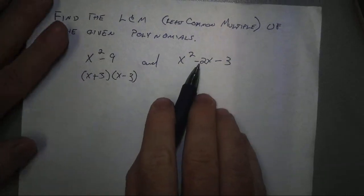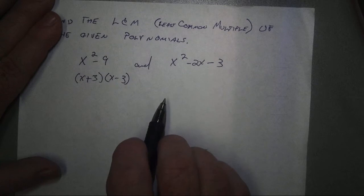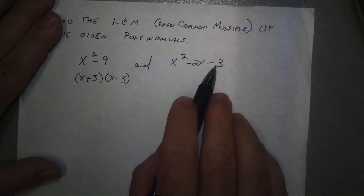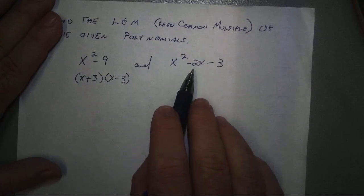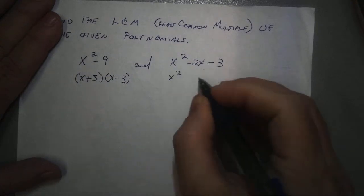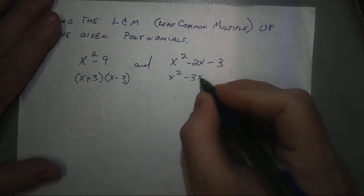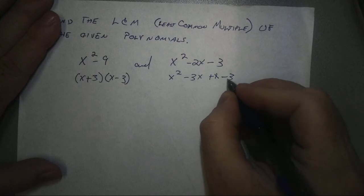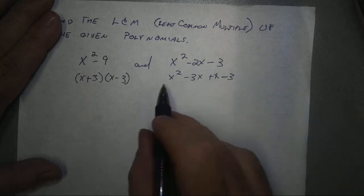And I can factor x squared minus 2x minus 3 using the AC method. 1 times negative 3 is negative 3. Factors of negative 3 that add up to negative 2 are negative 3 and 1. x squared minus 3x plus x minus 3. And then, I can factor by grouping.